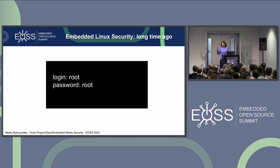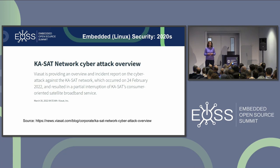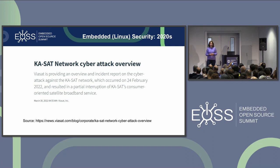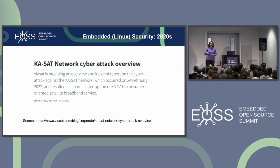Because since the beginning of embedded Linux, things have changed a little bit. And Linux security in the 2020s looks more or less like this example: a Viasat broadband satellite attack. If you read through the press release between the lines, you will find out that the attackers went through a mal-configured VPN and accessed devices through the management network.